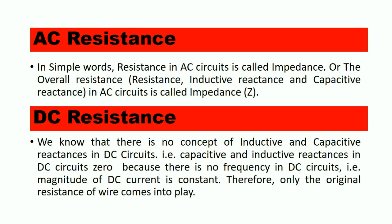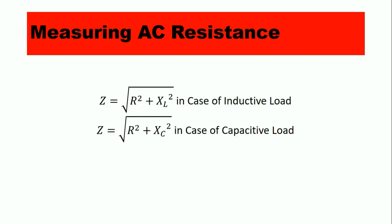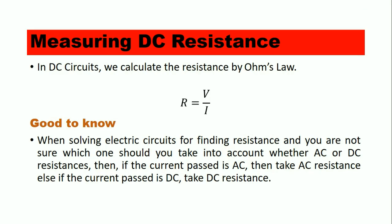We can measure AC resistance as follows: for an inductive load, it is given as Z = √(R² + XL²); for a capacitive load, it is given as Z = √(R² + XC²), where XL and XC are the reactances of the inductor and capacitor respectively.